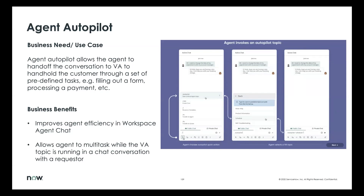A couple of examples: one is you're trying, as an agent, to troubleshoot an issue and you need to gather a bunch of information before you actually get to the troubleshooting part. You might want to ask the end user for what kind of browser version they're on, what kind of OS they're on, what kind of hardware they're using, et cetera.